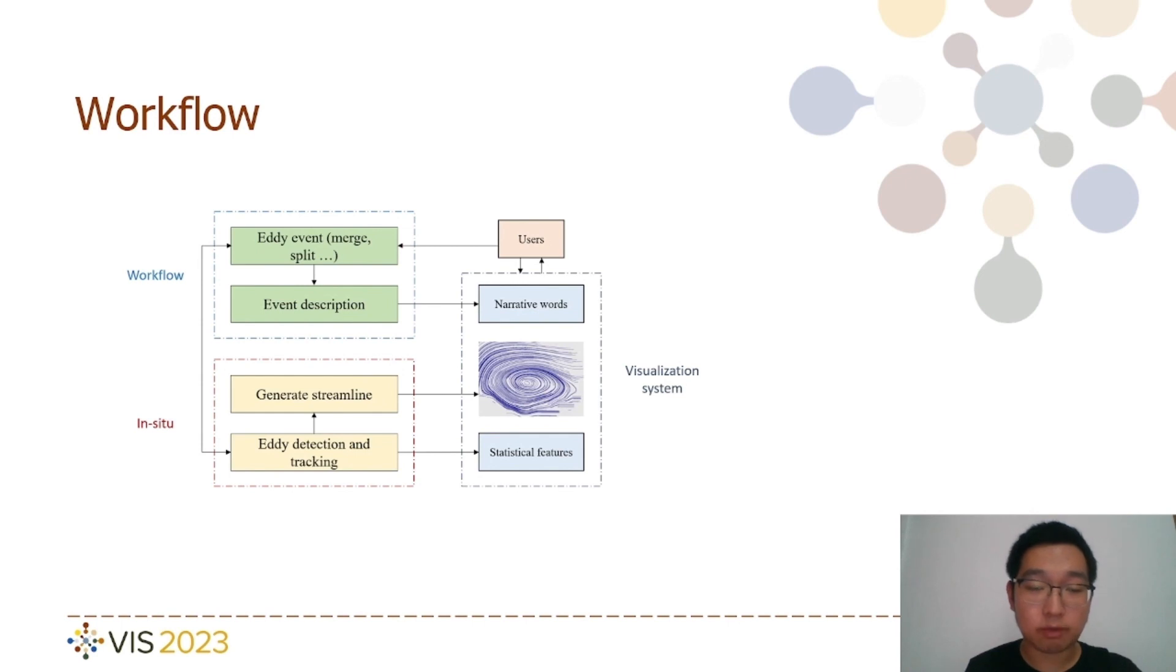The architecture of our work is primarily divided into four components: an in-situ computing model and a workflow model, a visual interaction model, and a machine learning processing model. The entire system is controlled through user interactions. The in-situ computation model is responsible for identifying and tracking eddies. It generates statistical data and high-precision streamline images of the selected area based on user preferences.